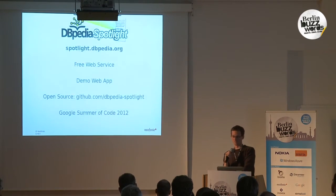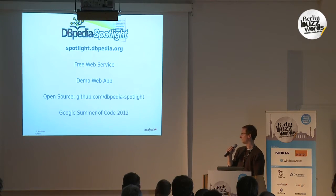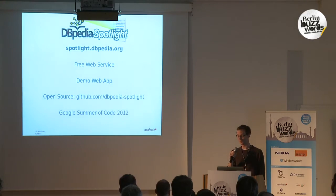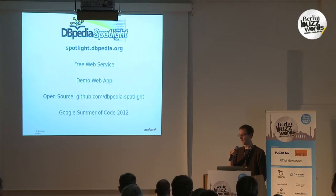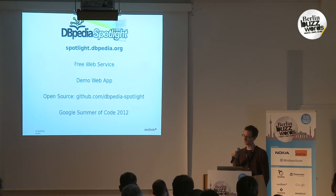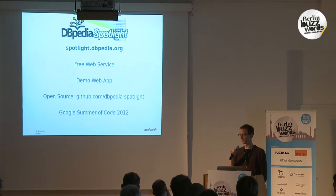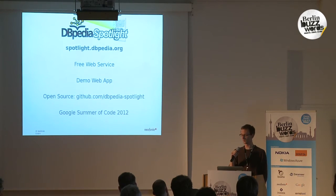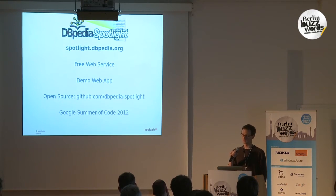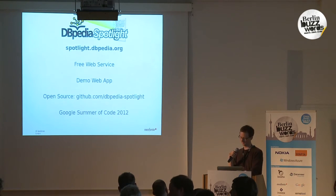Some advertisement at the end. I already told you about DBpedia Spotlight — this is my favorite open source project and it performs exactly the task we saw. You give it a plain text and it will find entities in the text and disambiguate them for you. We have a free web demo, we are open source on GitHub, and we are also participating in Google Summer of Code. Look out for new developments at the end of the year.